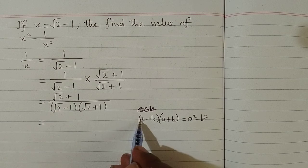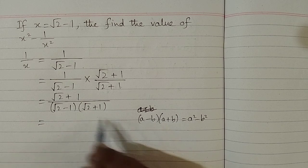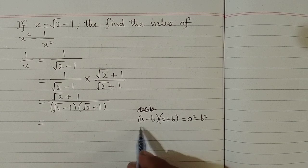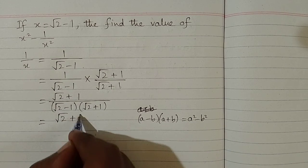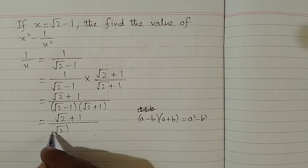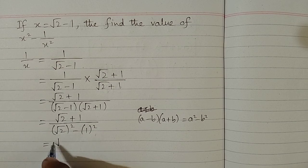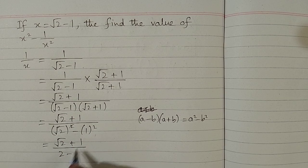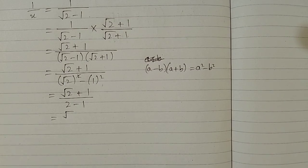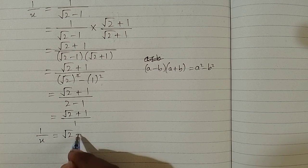We have square root of 2 in place of a and 1 in place of b. Applying this algebraic identity, we write the numerator as it is and in the denominator we have square root of 2 squared minus square of 1, which gives 2 minus 1 equals 1. So we have square root of 2 plus 1 upon 1, and the value of 1 upon x is equal to square root of 2 plus 1.